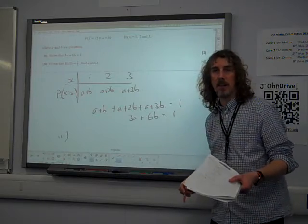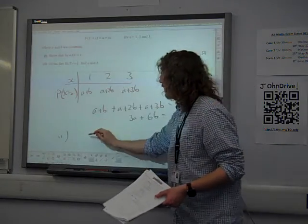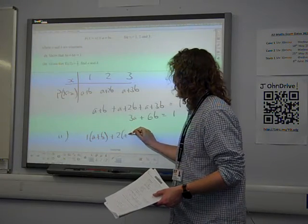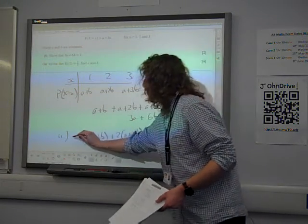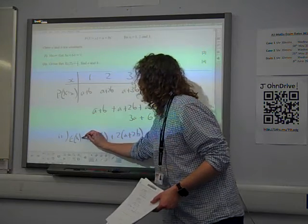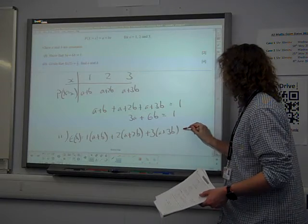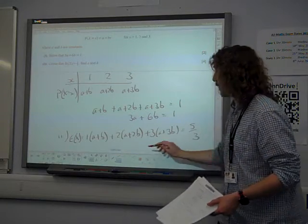So, if e of x is that, e of x is 1 times a plus b plus 2 times a plus 2b, this is the expectation of x, plus 3 times a plus 3b. I've been told that that is equal to 5 over 3.